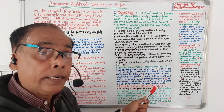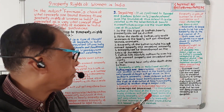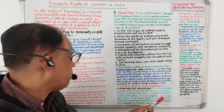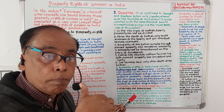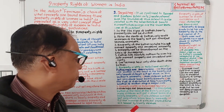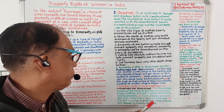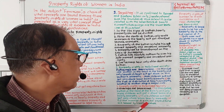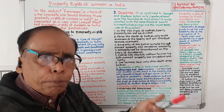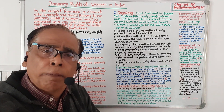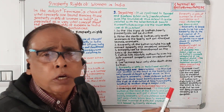Then, property rights in patrilineal society where the father is the head. In this system, the father is the head of the family and only male members will get a share from the family property. Girl children will not get a share. Till the marriage of girls, their expenditure will be borne by family members.